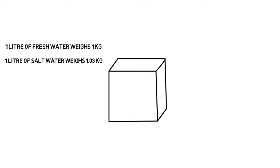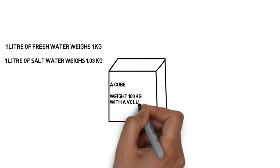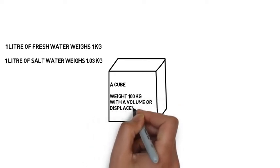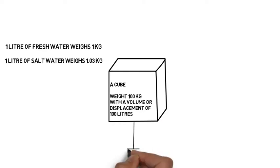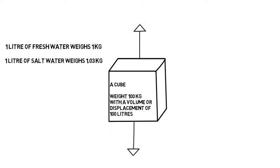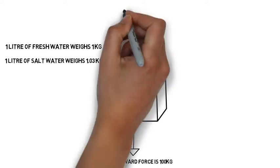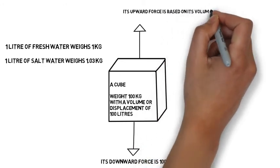If we take an object — let's imagine it is a cube — and we know the object's weight, in this case 100 kilograms, and we also know its volume or displacement (they're the same thing), let's say it's 100 liters. We know there is a downward force and an upward force acting on this cube. The downward force is 100 kilograms.